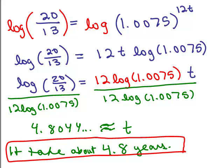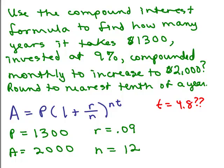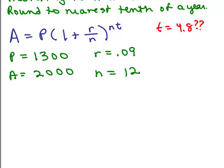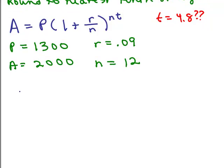At this point, I would suggest actually checking to see if this seems correct. So let's go back to the original problem. Here's the original problem. We already identified P, R, A, and T. But what I want to do is now see if you actually invested this $1,300 at 9% compounded monthly for 4.8 years, is it really $2,000? So that's what I mean by checking.